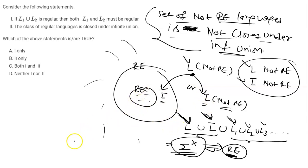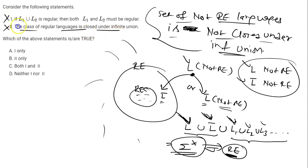So for this question: Statement 1 is false and Statement 2 is also false — the class of regular languages is not closed under infinite union. Since both statements are false, the answer is option D: neither 1 nor 2.